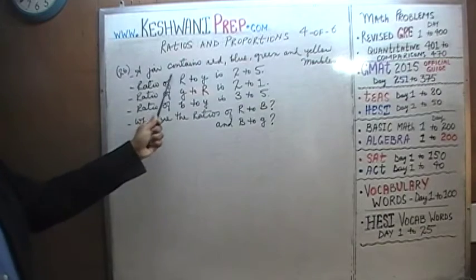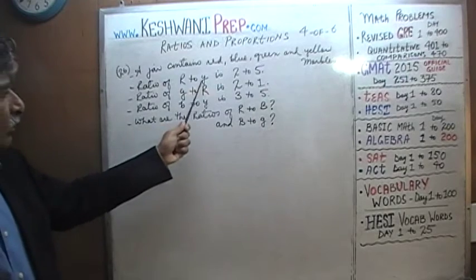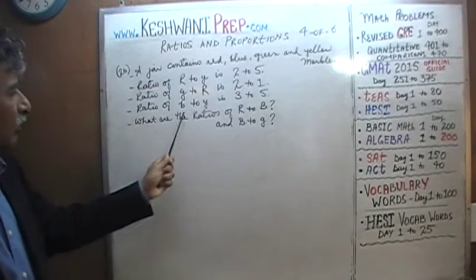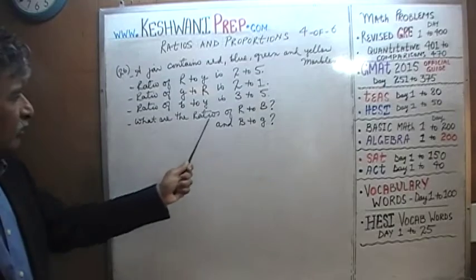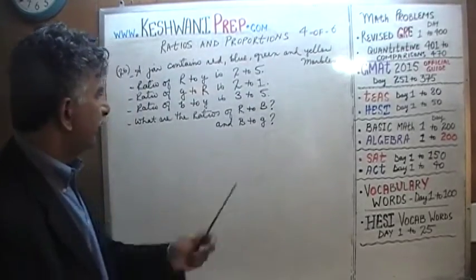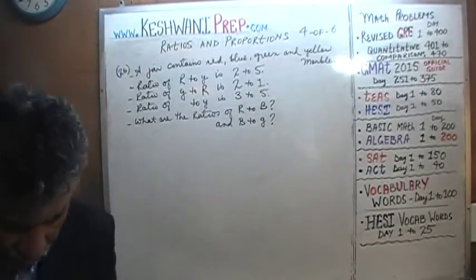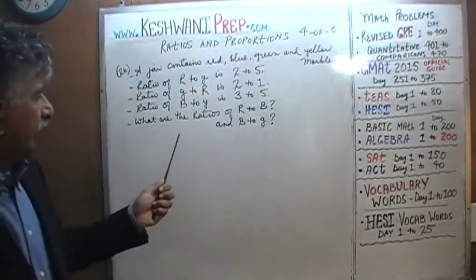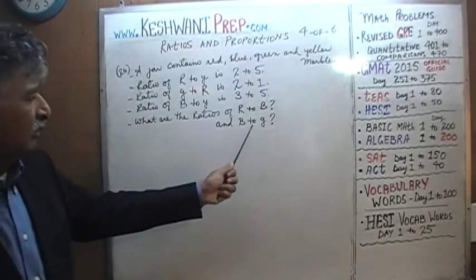Problem 26 says: a jar contains red, blue, green, and yellow marbles. The ratio of red to yellow is 2 to 5. The ratio of green to red is 2 to 1. The ratio of blue to yellow is 3 to 5. The question asks: what is the ratio of red to blue, and furthermore, what is the ratio of blue to yellow?